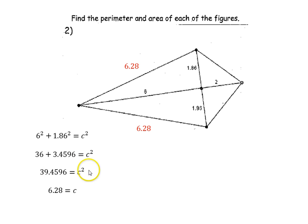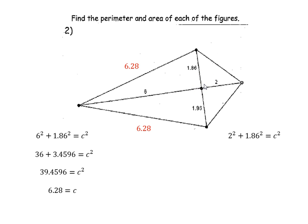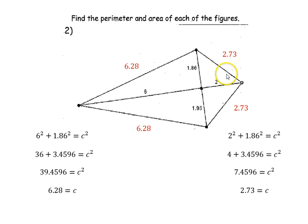We're not quite ready to find the perimeter yet because we're missing two more side lengths. Looking at the other right triangle: a² + b² = c², where c is the hypotenuse. 2² is 4, and 1.86² is 3.4596, giving c² = 7.4596. Taking the square root gives c = 2.73. So this missing side length is 2.73, as is the other one. Now we can find the perimeter: 6.28 + 6.28 + 2.73 + 2.73 = 18.02.